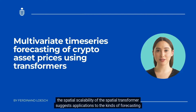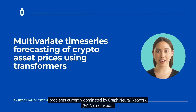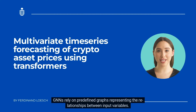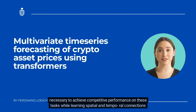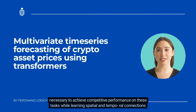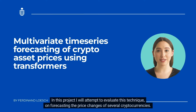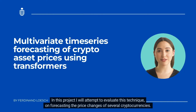The spatial scalability of the spatial transformer suggests applications to forecasting problems currently dominated by graph neural network GNN methods. GNNs rely on predefined graphs representing the relationships between input variables. We empirically show that spatio-temporal sequence learning with transformers can recover the relationships necessary to achieve competitive performance on these tasks, while learning spatial and temporal connections purely from data. In this project, I will attempt to evaluate this technique on forecasting the price changes of several cryptocurrencies.